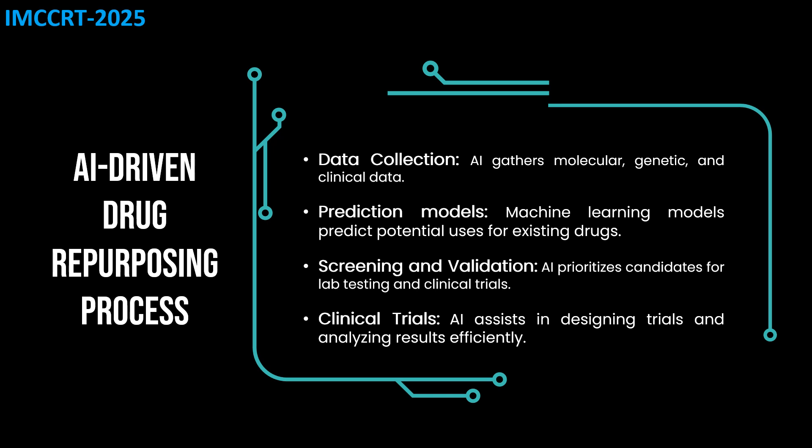The AI-driven drug repurposing process involves several steps. First, data collection: AI gathers molecular, genetic, and clinical data. Second, prediction models: machine learning models predict potential uses for existing drugs. Third, screening and validation: evidence from lab testing and clinical trials. AI also assists in designing trials and analyzing results efficiently.